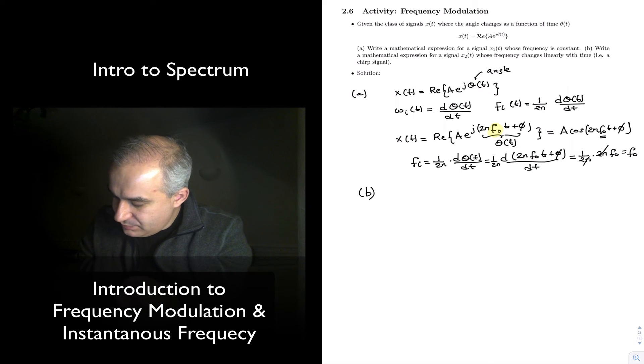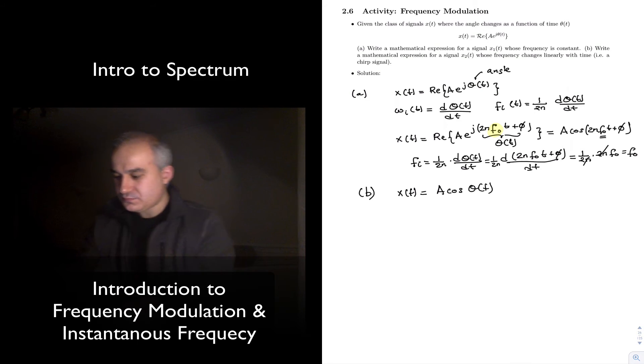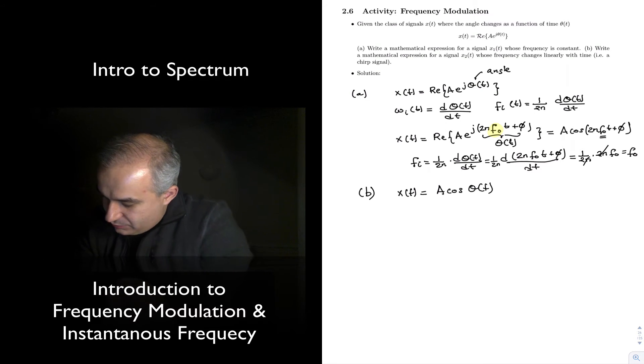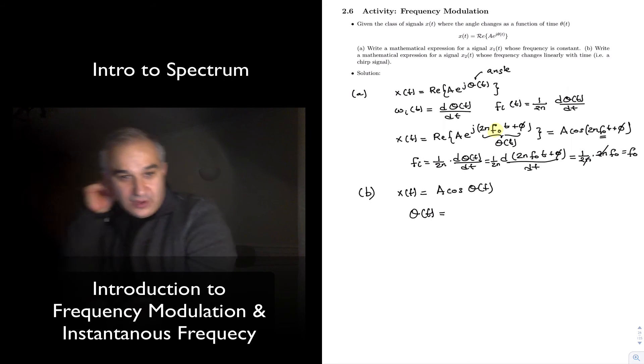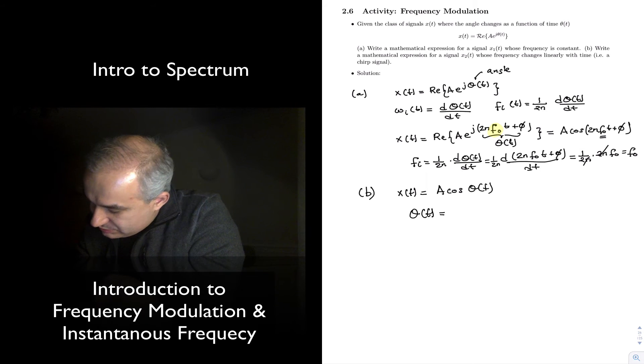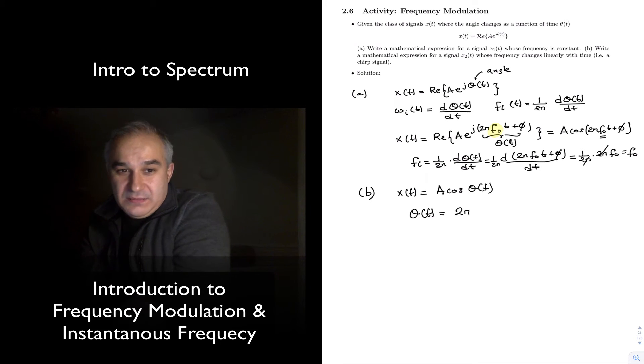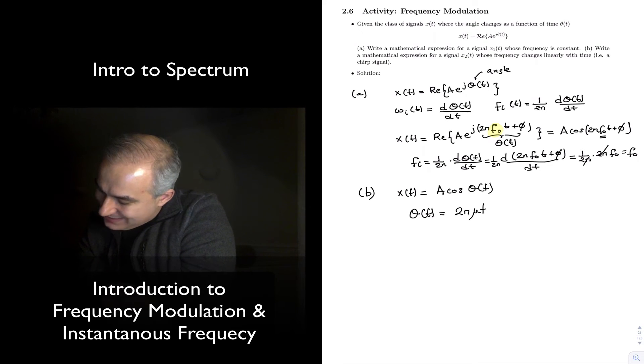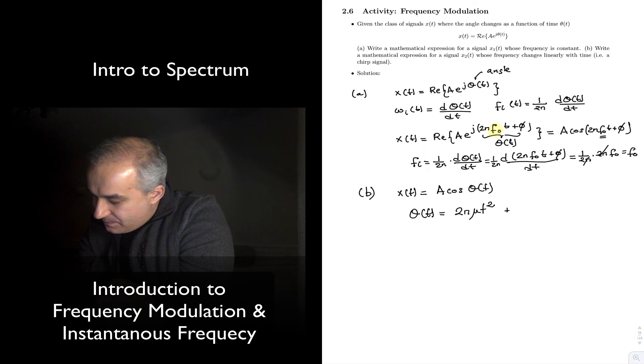So, here, x(t), if we wanted to do a cosine of theta t, we can do theta if we have a quadratic equation there, like 2π μ t squared plus 2π f0 t plus θ.